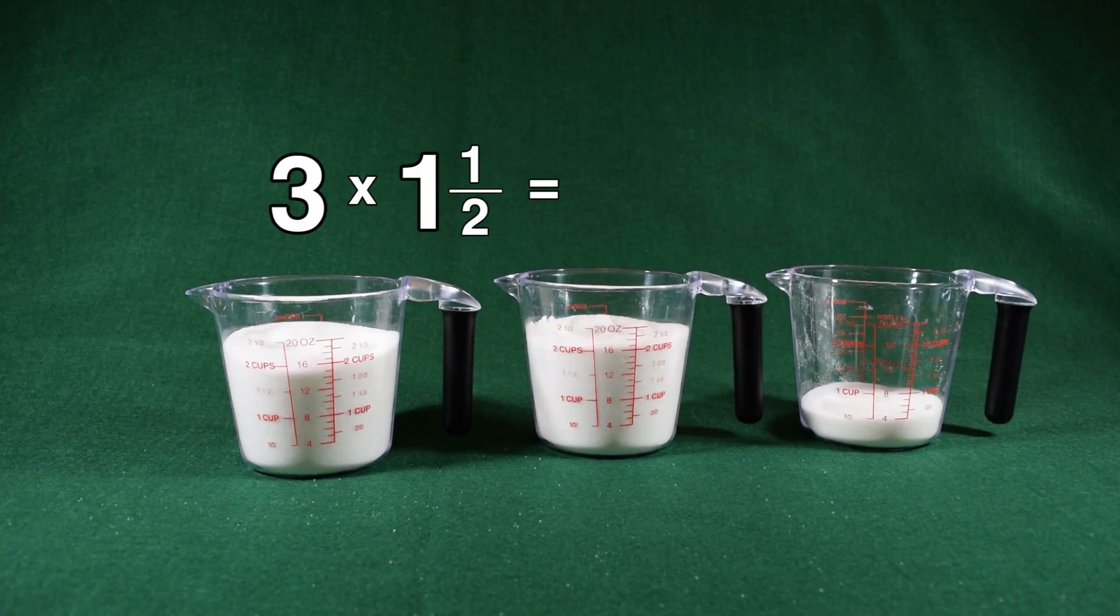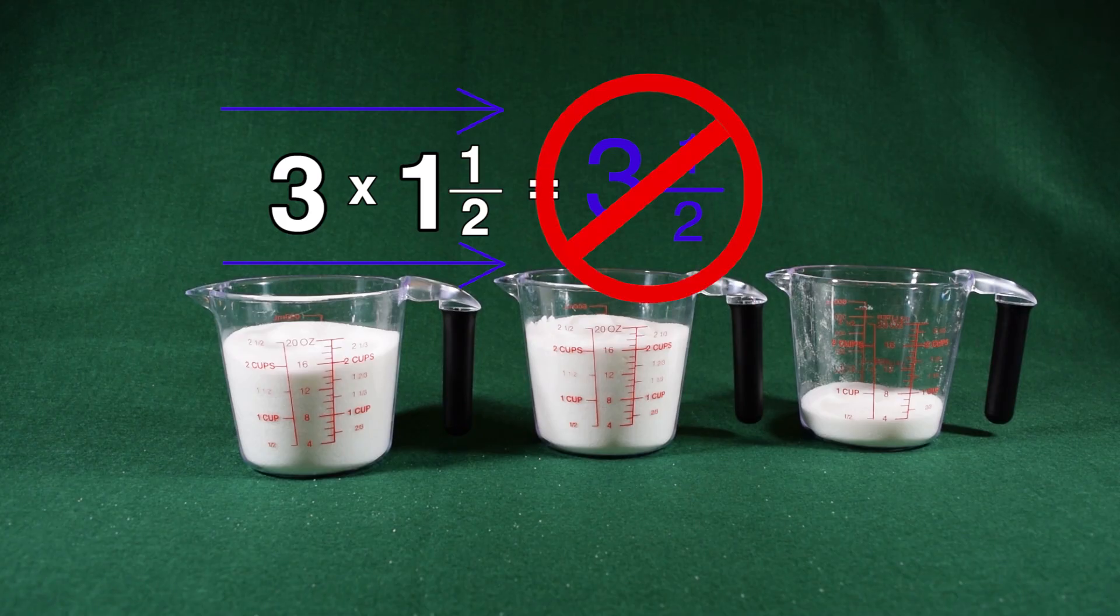A lot of people try to multiply three times one and a half by simply multiplying the whole numbers together and dragging the fraction along. If we do that, three times one gives us three, and keeping the one half, we'd get three and a half. We know that's not right because we can see we have four and a half cups total.